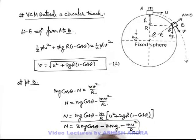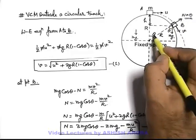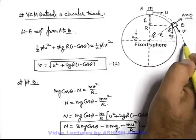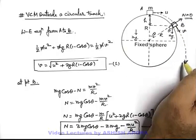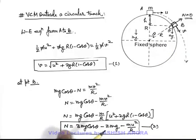So this relation, equation number 2, is also very much beneficial when we handle various kinds of problems. And the position where N is going to be zero, that angle, a particular angle where N becomes zero and particle follows projectile motion, can be given by equating this N to zero. We'll get the value of theta.